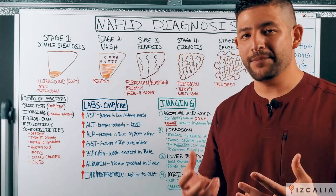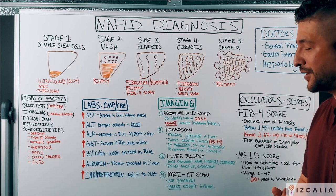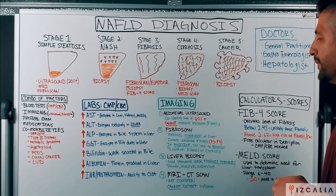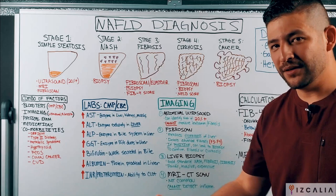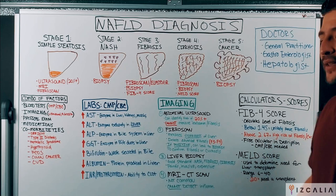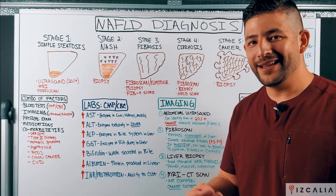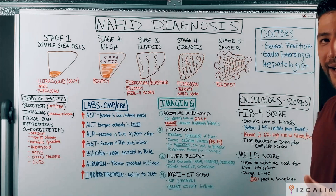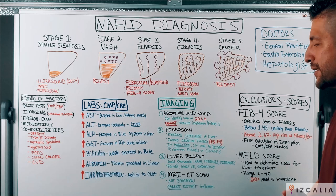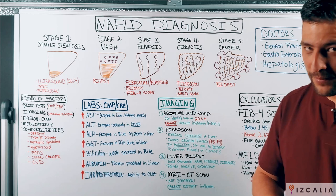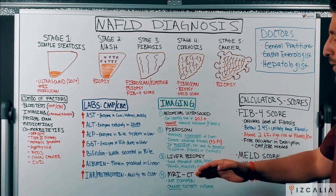The second most common type of imaging is the fibroscan, or elastography. The fibroscan is a specific form of ultrasound that measures the amount of stiffness in the liver, and based on that stiffness, your doctor can determine the level of fibrosis currently present. The fibroscan is typically very good at identifying advanced fibrosis like F3 or F4, but less sensitive at detecting mild fibrosis like F1 or F2. So there are certain limitations, but it's still better than the ultrasound for identifying fibrosis.